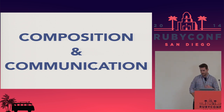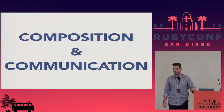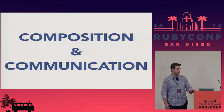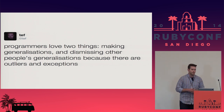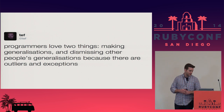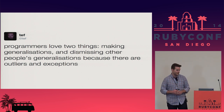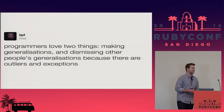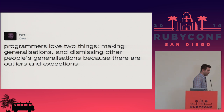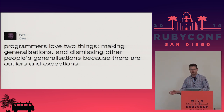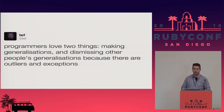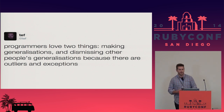While I was working on this presentation, there's a tweet that came across: 'Programmers love two things — making generalizations and dismissing other people's generalizations because they're outliers.' The reason I'm sharing this is that concurrency is a huge topic. In 45 minutes I can't possibly cover everything. You might have experiences that don't fit with what I'm going to say, and I can't possibly cover it all.